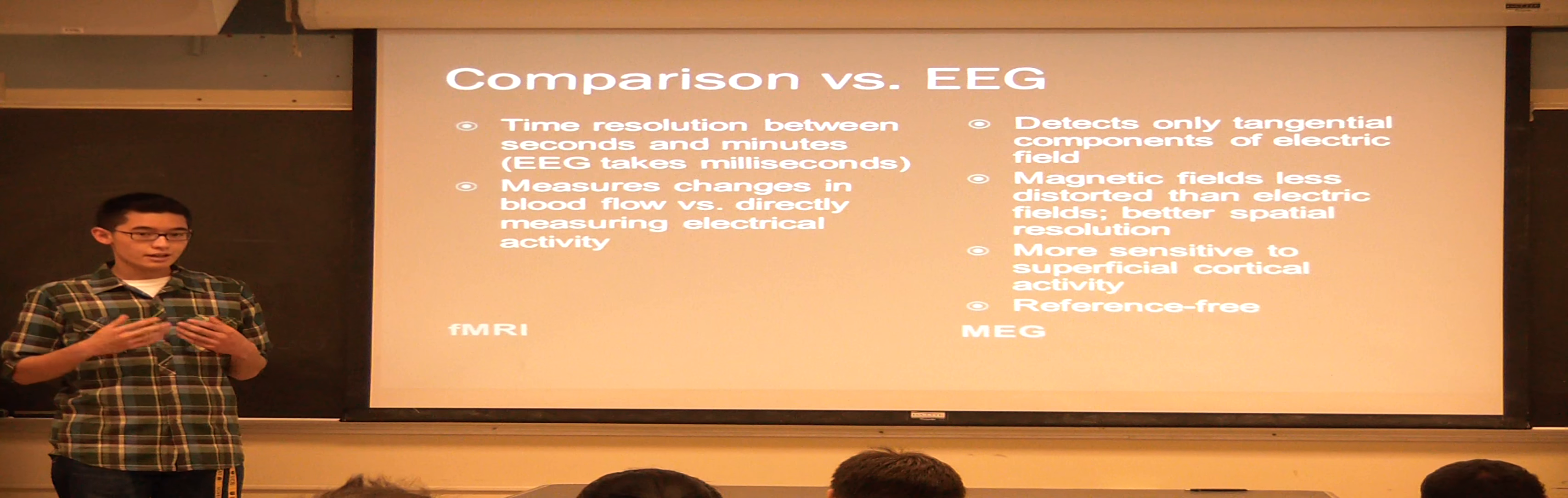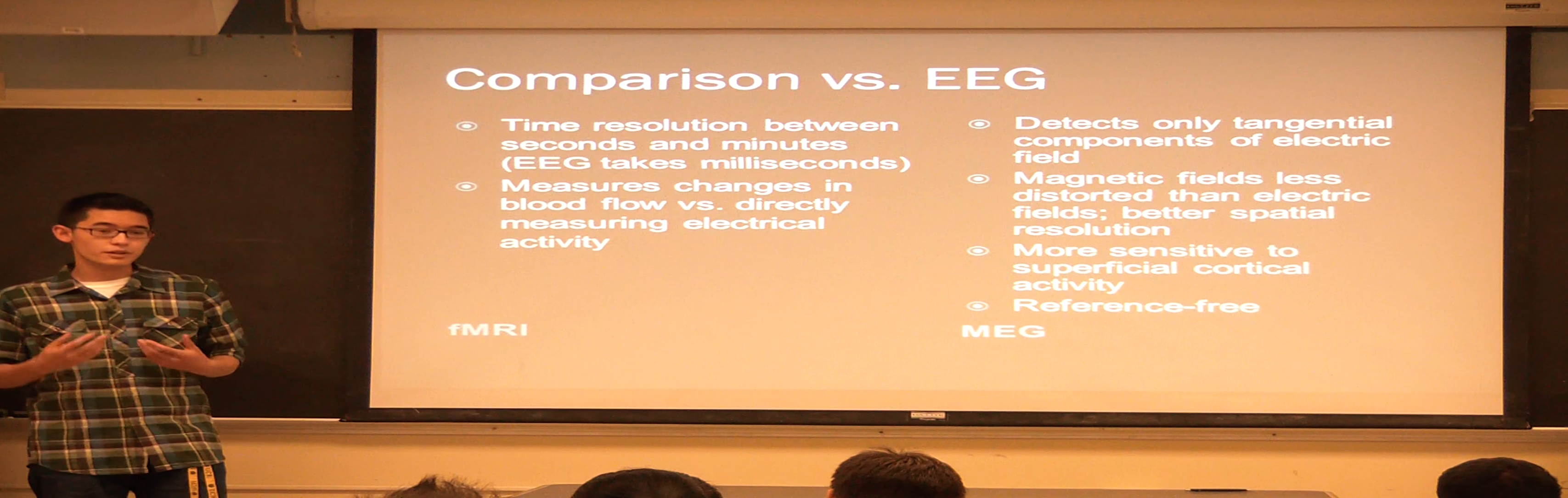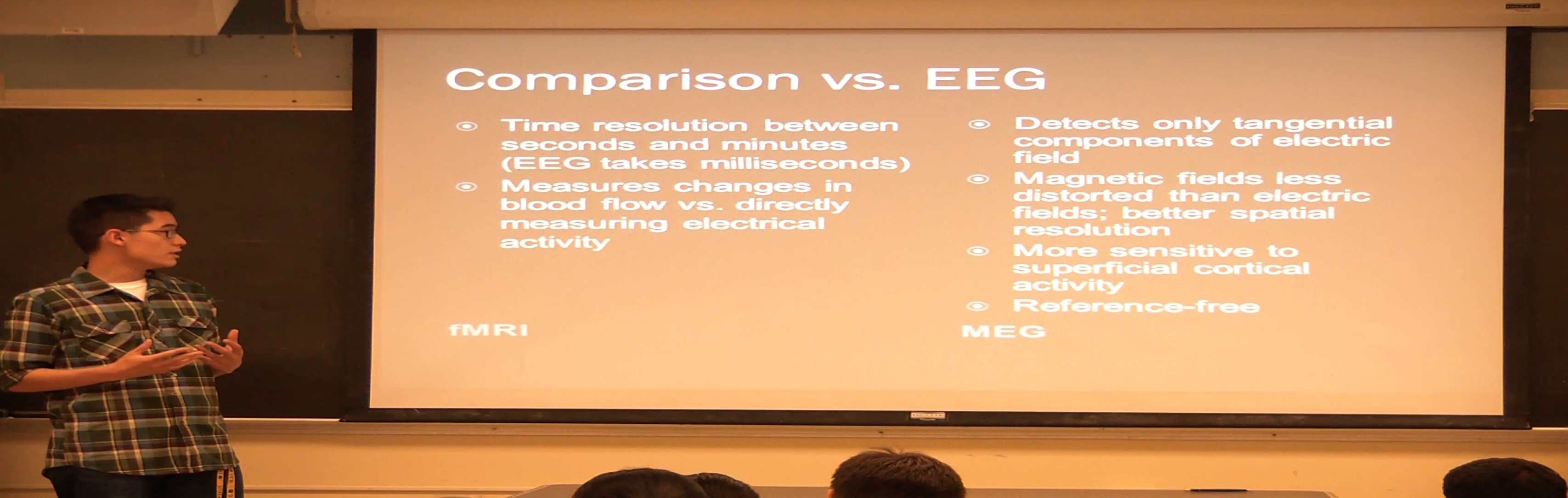In addition, the fMRI only measures the changes in the blood flow, whereas the EEG directly measures the electrical activity within the brain.